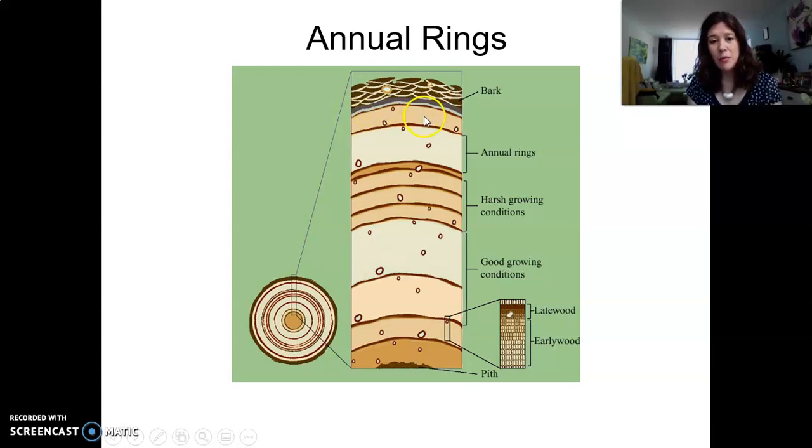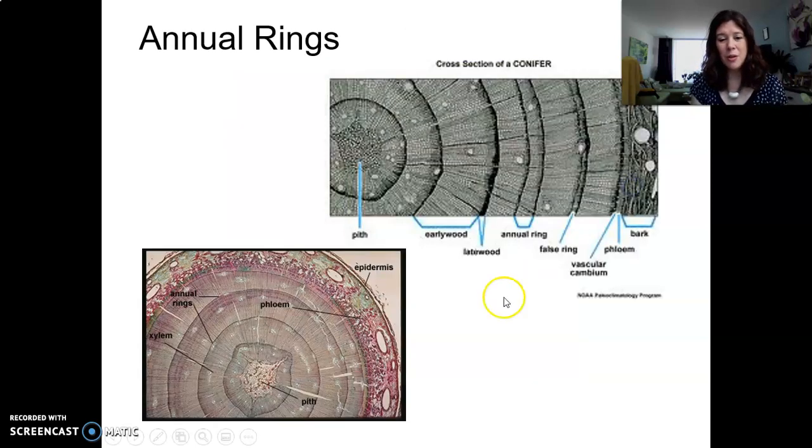So we only have a spring and a summer area in one annual ring. And then in the autumn and the winter, we have no more of those growth anymore.